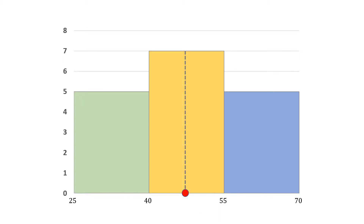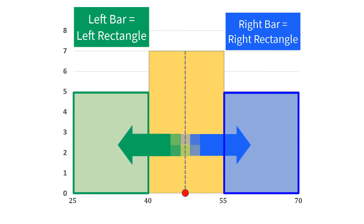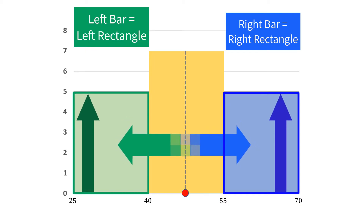You can think of it as: the left and right bars will apply force on the vertical dashed line in proportion to their height, or frequency. If the frequencies of the preceding and succeeding class have the same value, then the dashed line lies in the middle of 40 and 55. Hence, the value of mode will be the average of 40 and 55, that is 47.5.